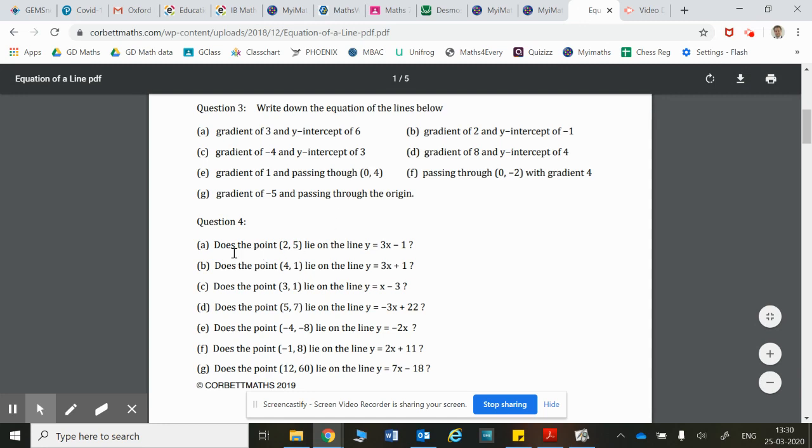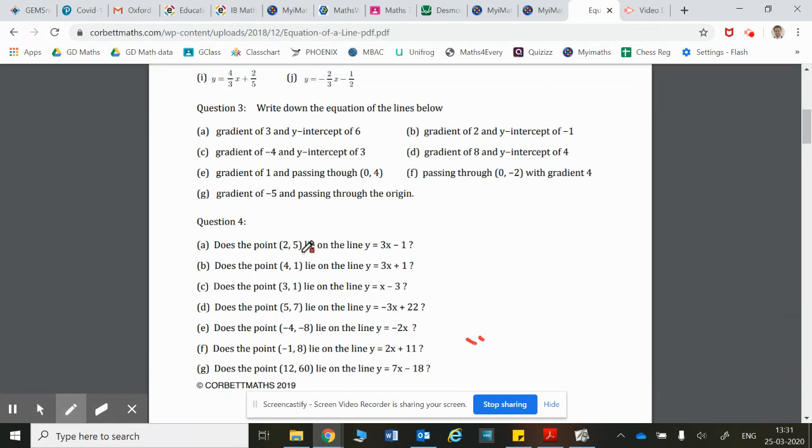Question 4a asks: does the point (2, 5) lie on the line y equals 3x minus 1? Let's see if this pen works. Okay, so this is our x number - the x number always comes first.